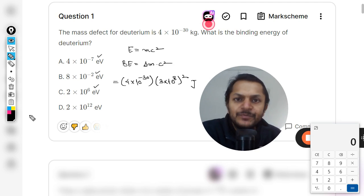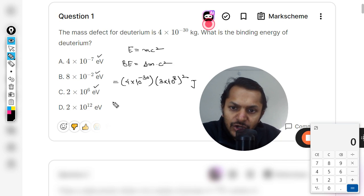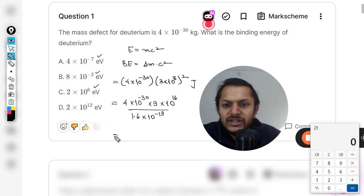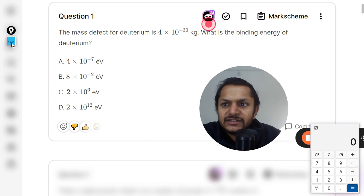So there we go. So 4 × 10^-30 × 9 × 10^16 will be divided by 1.6 × 10^-19. This is what we need to calculate.